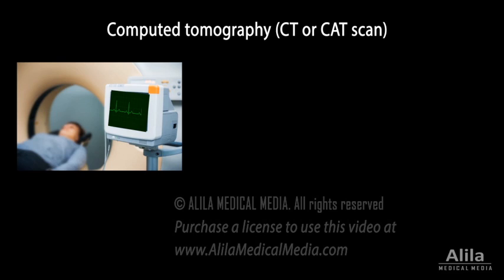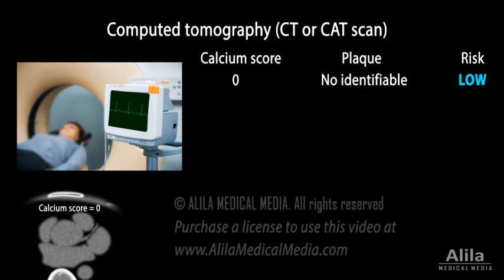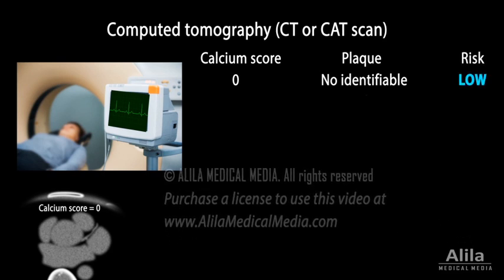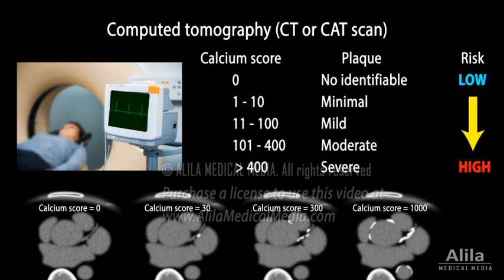The result is given as a number called a calcium score or Agatston score. A score of zero, or negative result, means no calcium is present in the heart, suggesting a low chance of having a heart attack in the future. When calcium is present, the higher the score, the higher the risk of heart disease. The results may help provide guidelines for treatment plans as well as lifestyle changes.